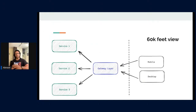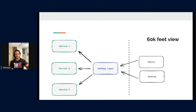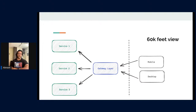Here's a 60,000-foot view of the architecture. You have many clients on the right — mobile or desktop — that all talk to a central gateway layer. This gateway layer acts as an aggregator because we have GraphQL in between: it talks to many services, collates the data, processes it, and sends it back to the client. It also handles authentication, authorization, and other important concerns.